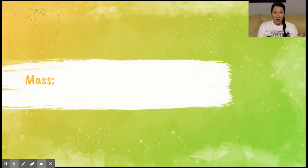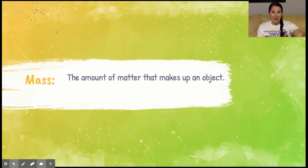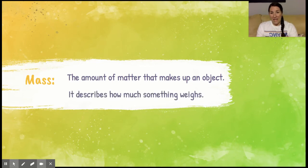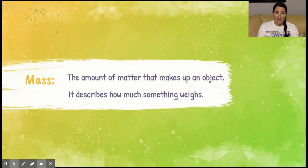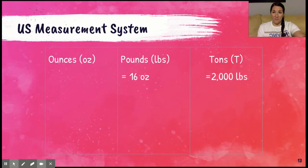Now that we've looked at volume, we're going to look at mass. Mass is the amount of matter that makes up an object. That's a complicated way to say that today we're going to describe how much something weighs. We're going to look at both the US measurement system and the metric system.